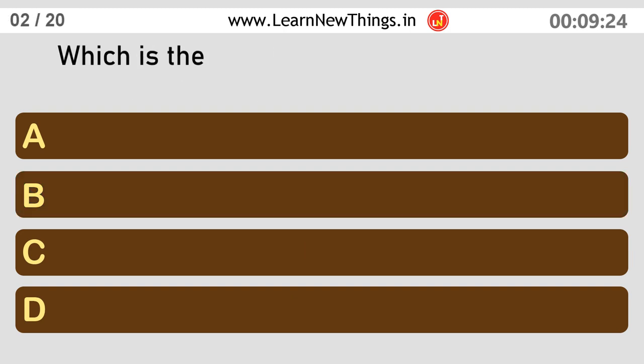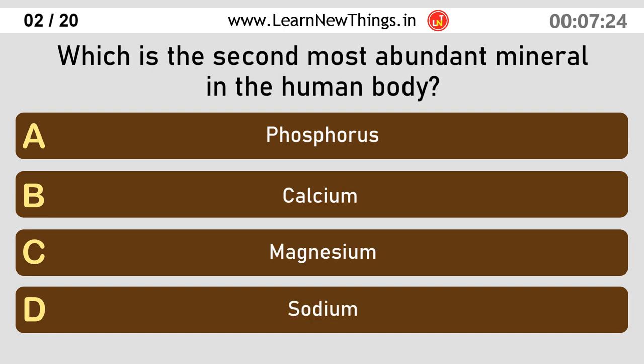Which is the second most abundant mineral in the human body? Phosphorus.